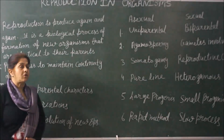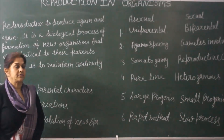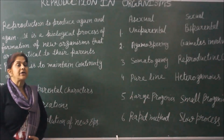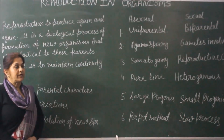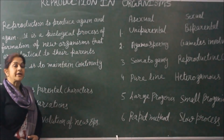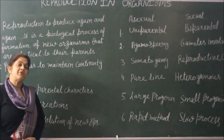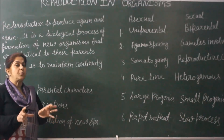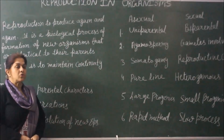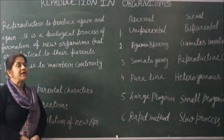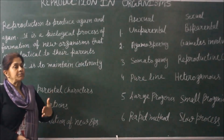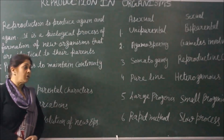The next aspect of reproduction is that it retains parental characters. This means that an organism produced through reproduction resembles its parents. Most commonly, when a baby is born, we say that the baby has some characters from its mother and some from its father. These two parental characters are passed on to the baby through reproduction.